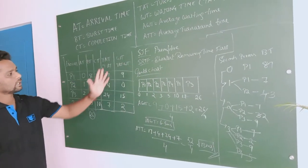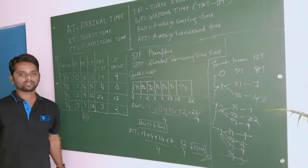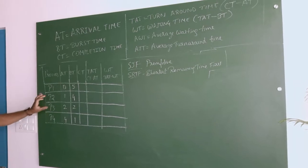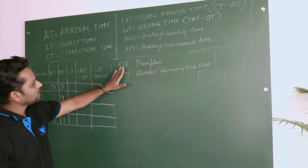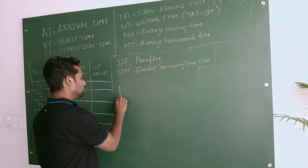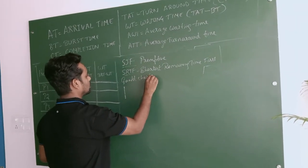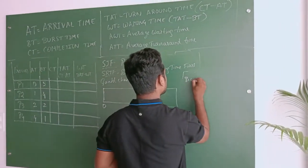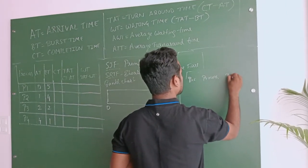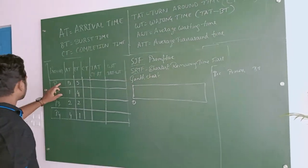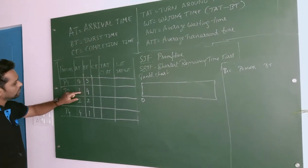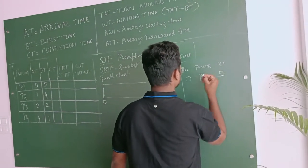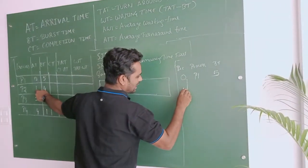Hope you understood SJF preemptive. Now we'll solve one more problem based on SJF preemptive. Consider the following table with four processes: arrival times are 0, 1, 2, 4. We are calculating SJF preemptive — Shortest Remaining Time First. Starting from 0 seconds: at 0 seconds, only P1 can execute, having burst time of 5. It executes until 1 second — the next process arrival time. Remaining for P1 is 4.